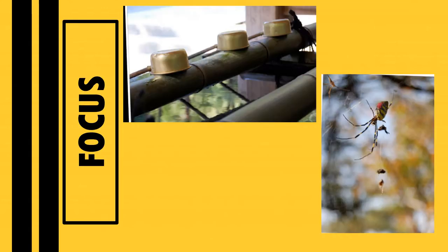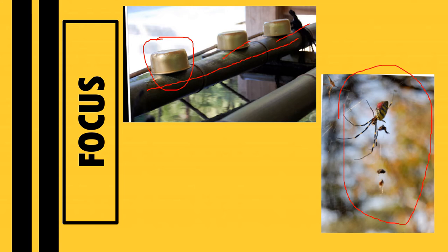Still connected to composition is focus, also called blur in some books. It is defined as the distance setting on a lens to define a subject sharply. As you can see in the first image, the use of distance is very important to see the subject matter itself. On the other hand, the blurring effect can also be used to focus on the subject matter.